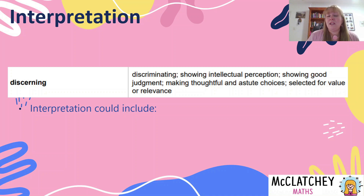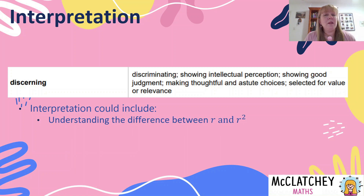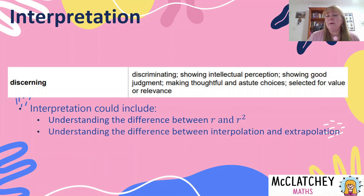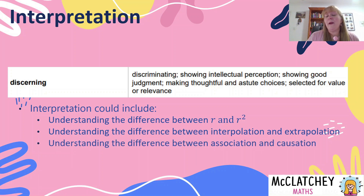Interpretation is also part of what's going on here. That could include how you've interpreted different variables in your assignment. For a bivariate data assignment, you need to understand the difference between Pearson's correlation coefficient R and the coefficient of determination R squared — they look similar, but they are interpreted quite differently. When doing interpolation and extrapolation, you also need to understand the difference between two variables being associated or related versus one causing another. That analysis and evaluation of your results is where some of your solve marks could come from.